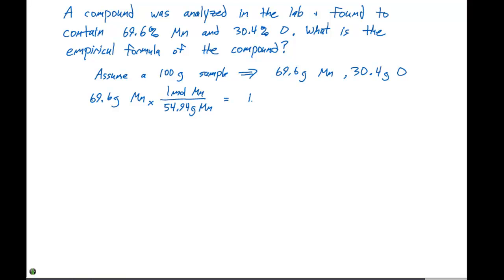This gives us 1.27 moles of manganese. Next, we take the 30.4 grams of oxygen times one mole of oxygen in 16.00 grams of oxygen. This gives us 1.90 moles of oxygen.